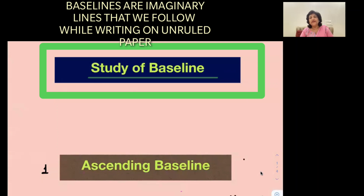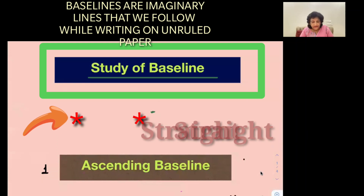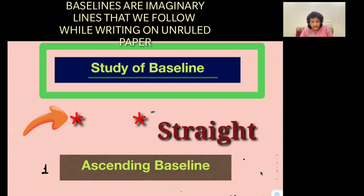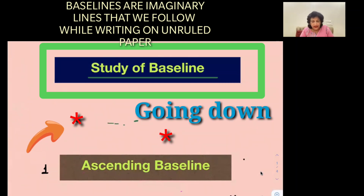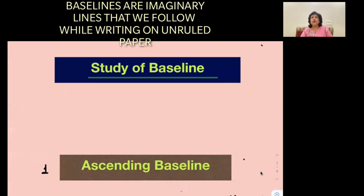When we are writing on an unruled paper, we may start from one point and end higher, or start and end lower, or start and end at the same level, or our handwriting may go wavy. So let us study the different types of baselines and what personality traits they show of the writer.